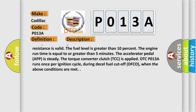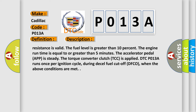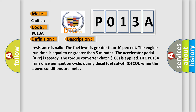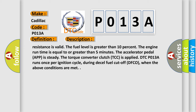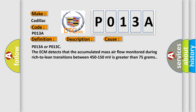The ignition voltage is between 10 to 18 volts. The learned heater resistance is valid. The fuel level is greater than 10%. The engine runtime is equal to or greater than five minutes. The accelerator pedal position is steady. The torque converter clutch (TCC) is applied. DTC P013A runs once per ignition cycle, during decel fuel cutoff (DFCO), when the above conditions are met. This diagnostic error occurs most often in these cases.